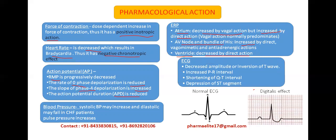Next is its effect on ECG, which is very important. Digitalis produces decreased amplitude or inversion of the T wave. As you can see, the normal T wave becomes inverted after Digitalis. The PR interval increases, the QT interval shortens, and there is depression of the ST segment.